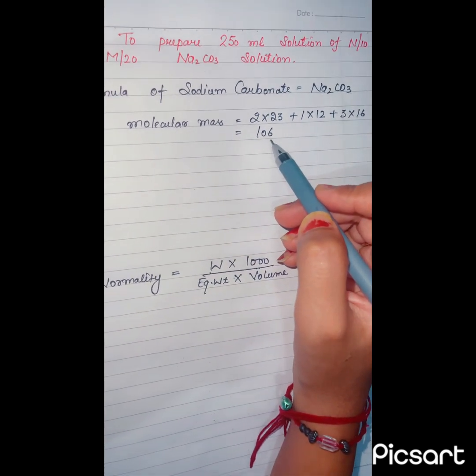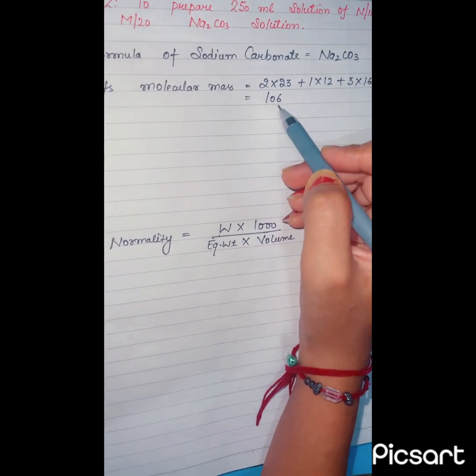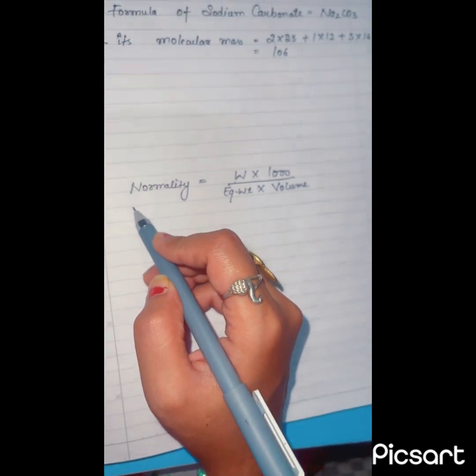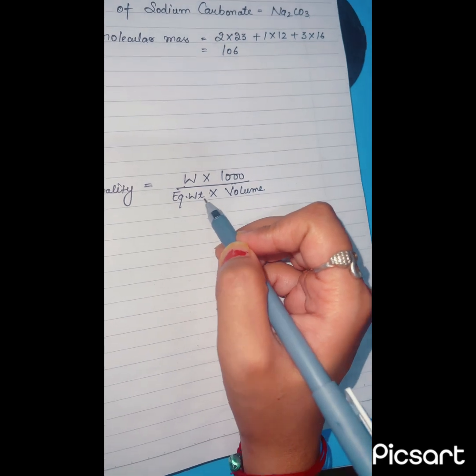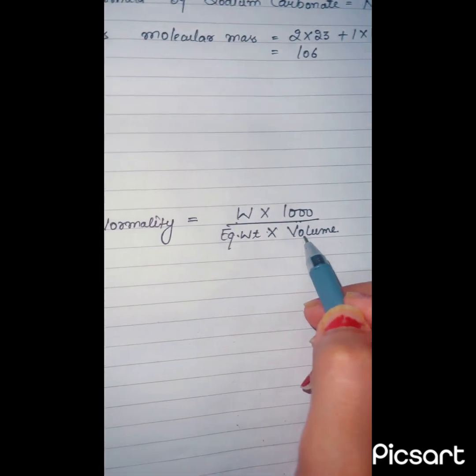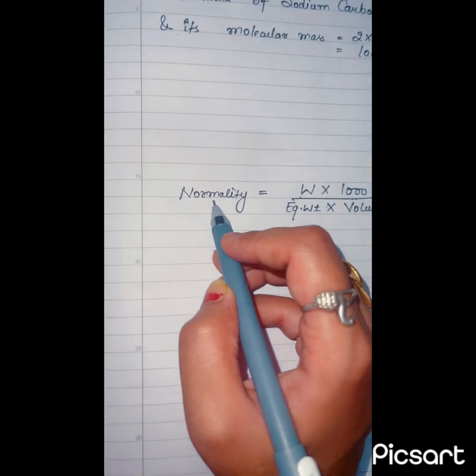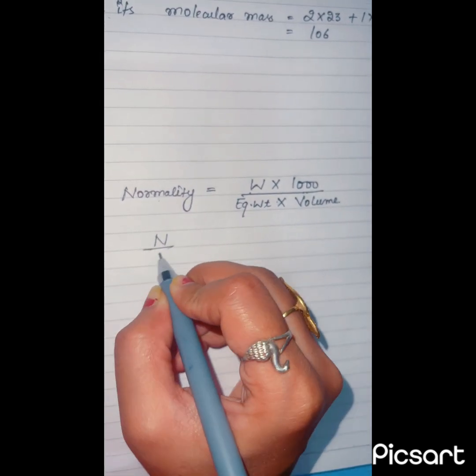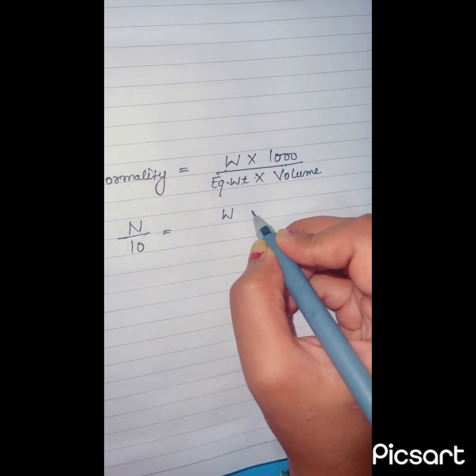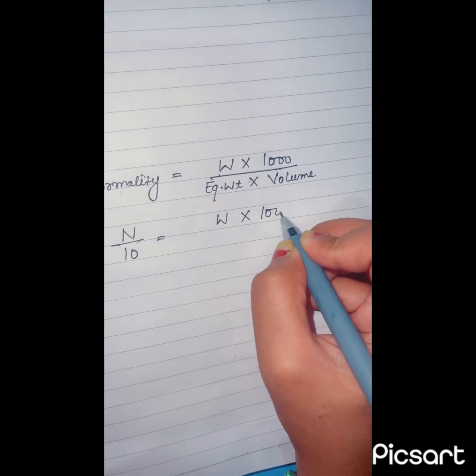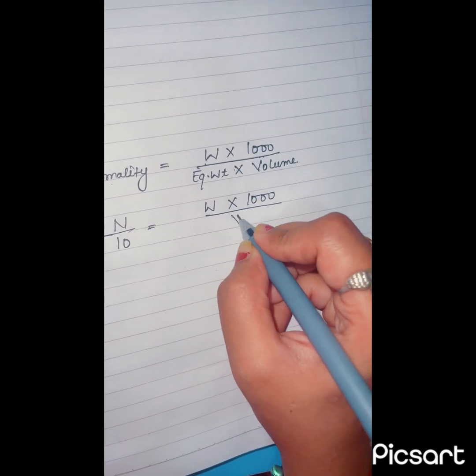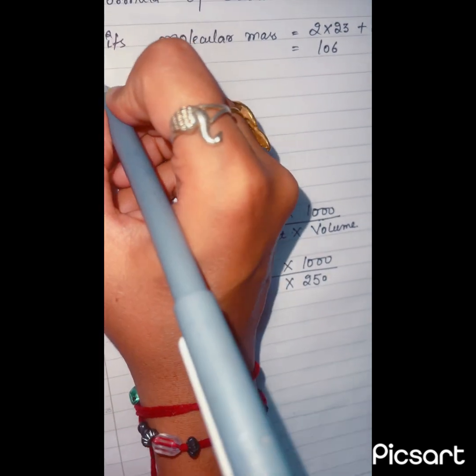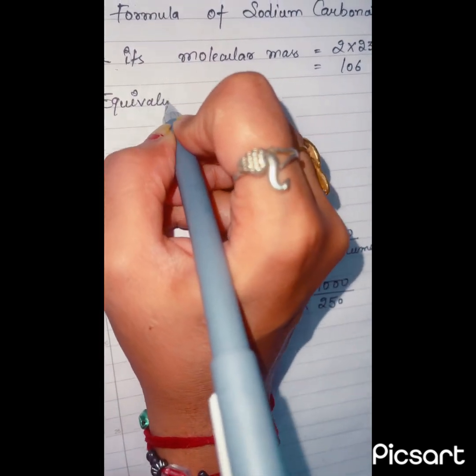Then we come to the topic of the formula of normality, that is weight into 1000 divided by equivalent weight into volume. Normality is N by 10, weight we have to find, that is 1000, equivalent weight we don't know, we have to find, volume is 250.